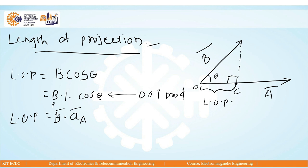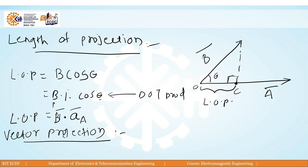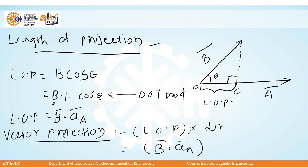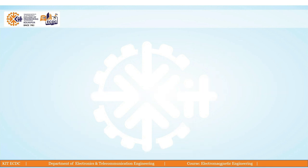The next concept is vector projection. Vector projection is nothing but the length of projection multiplied by a direction. The length of projection is B-bar dot the unit vector in the direction of A. Since we want to project vector B in the direction of vector A, the vector projection is given by (B-bar dot A-hat) multiplied by A-hat, where A-hat is the unit vector in the direction of A.